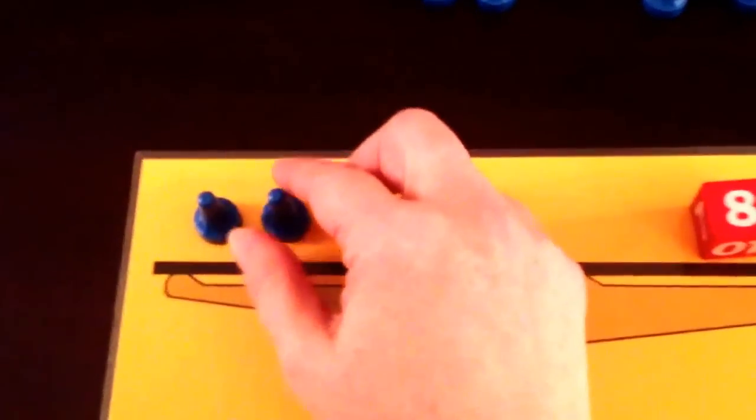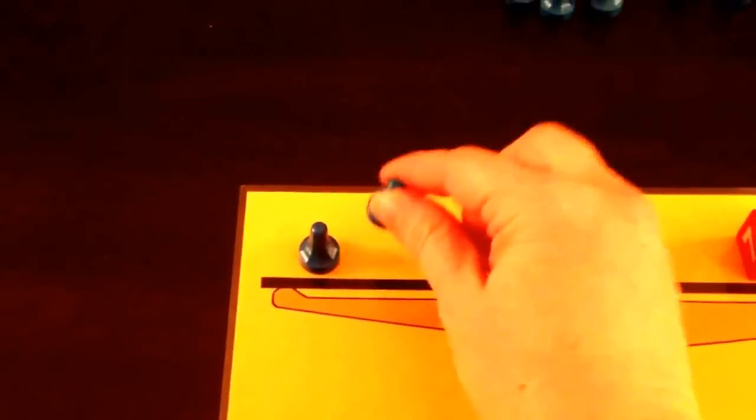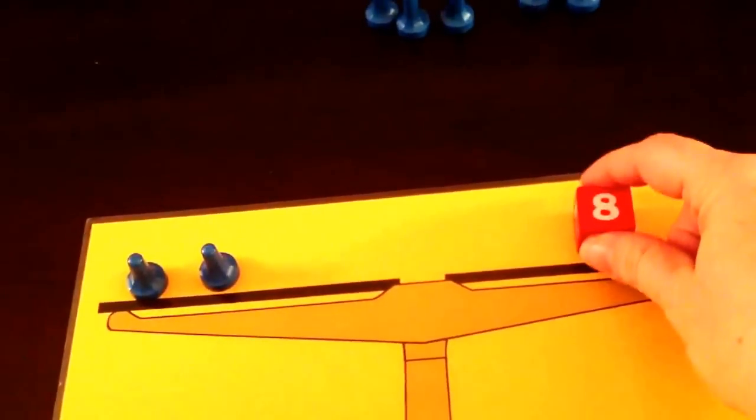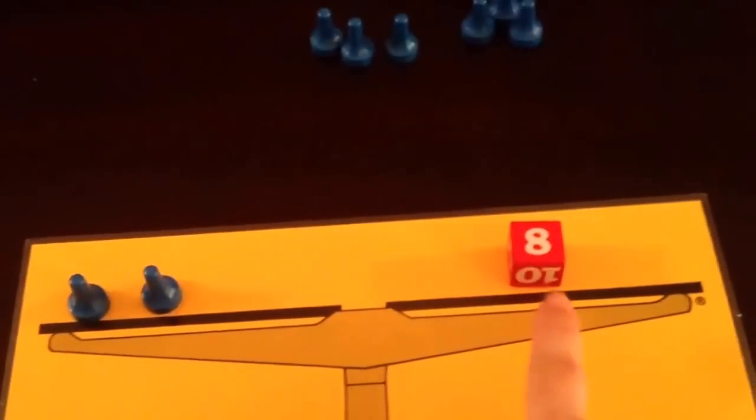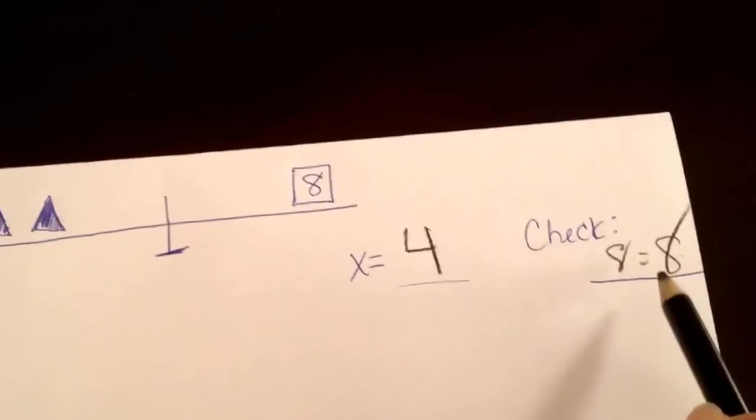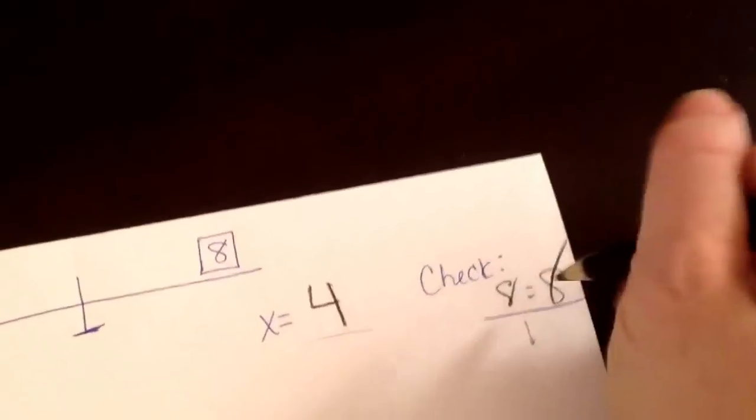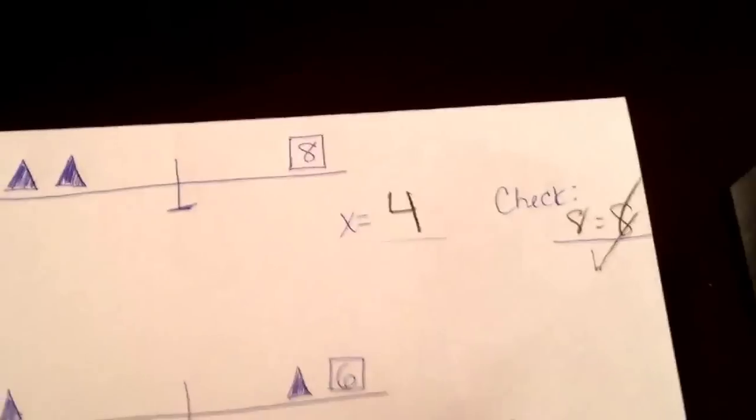that means on the left hand side we have 4 plus 4, which is equal to 8. So that means that 8 equals 8. So when we write our check over on the answer sheet, we're going to write 8 equals 8. And we can put a check mark there because we know that that is correct. It's checked because one side equals the other.